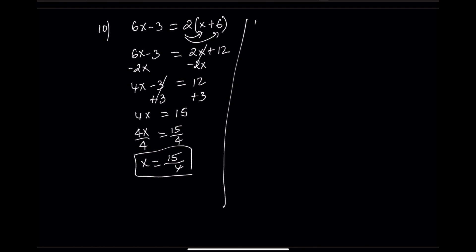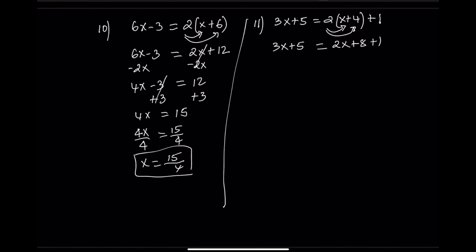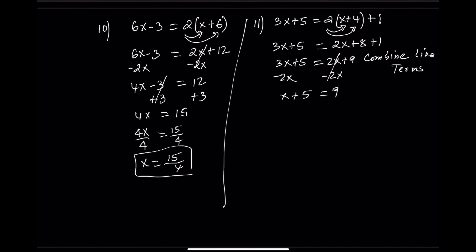Equation 11: 3x plus 5 equals 2 times the quantity x plus 4. Distribute — 2 times x plus 2 times 4 — which gives 2x plus 8. Now 3x plus 5 equals 2x plus 8. Step 2: combine like terms. Step 3: subtract 2x from both sides — x plus 5 equals 8. Step 4: subtract 5 from both sides — x equals 4.